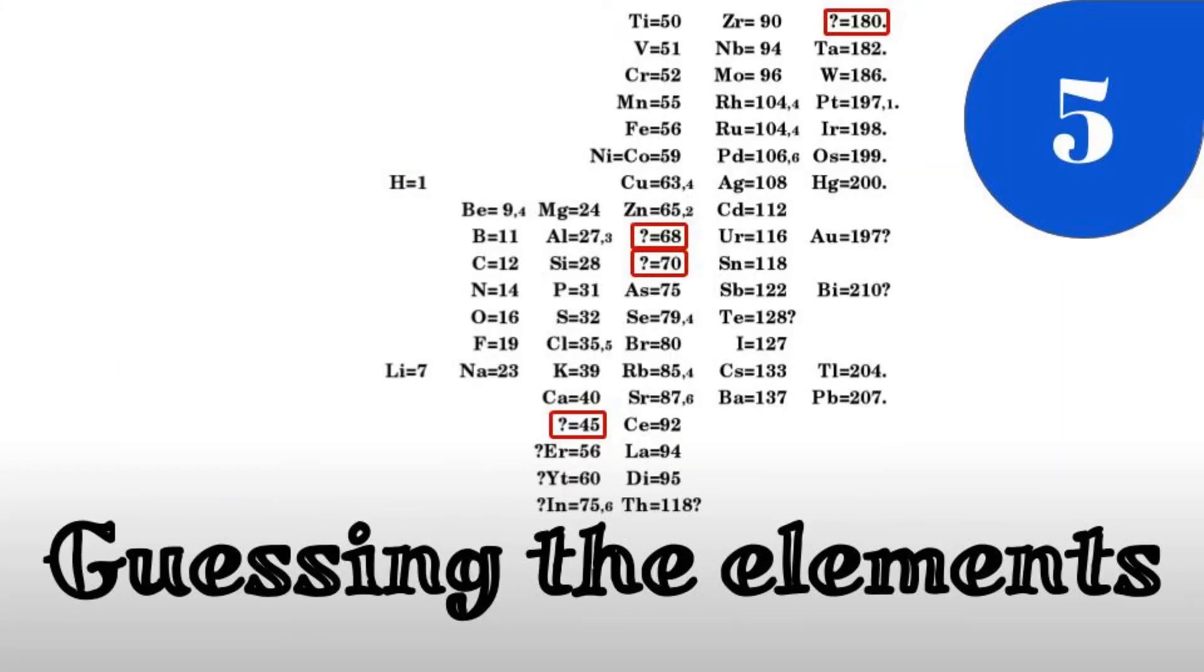Number five: Guessing the elements. When Mendeleev created his periodic table, he left empty spaces in the periodic table. This is Mendeleev's original table with the empty spaces marked in red. At the time, these elements were unknown. However, since he arranged his table based on the properties of the elements, he was able to guess their properties.